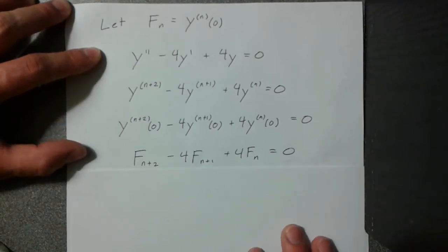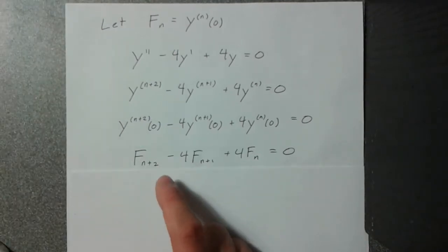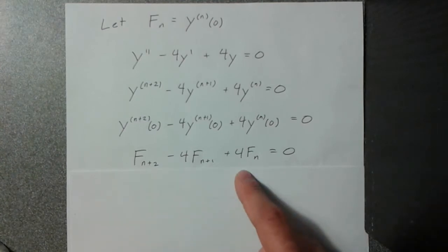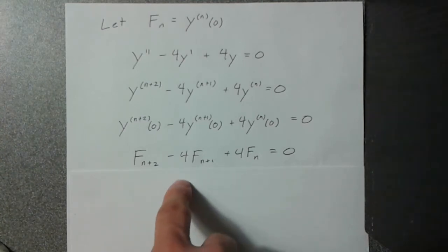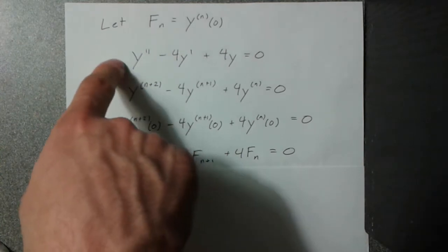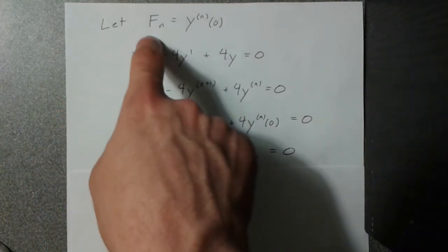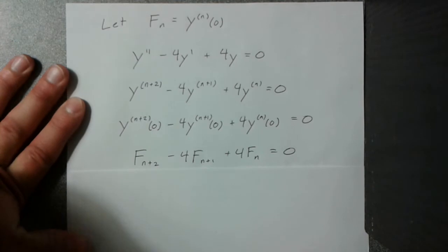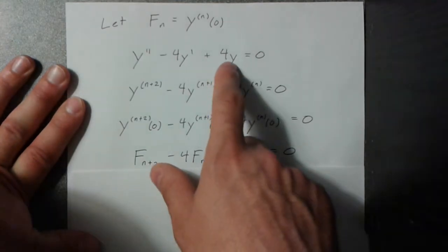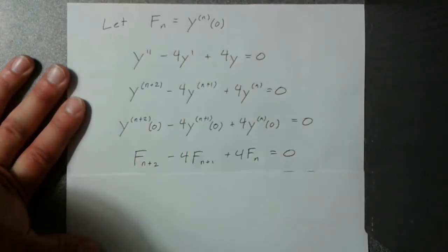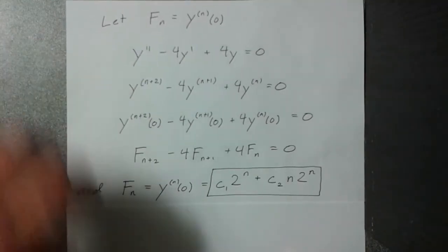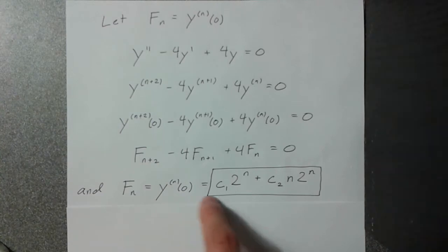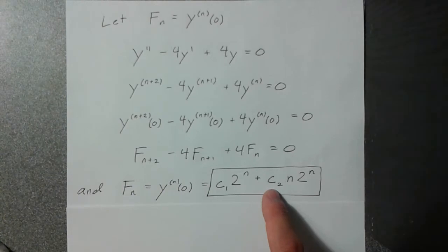And now we can see that this is just the recurrence relation that we're interested in. It follows as a result of having this differential equation and defining it like this. But what also follows as a result is since we know how to solve this differential equation and we found what the nth derivative of y is evaluated at 0, then we get a solution for fn. This is just the nth derivative evaluated at 0, which we determined to be this. I replaced c3 with a c2 just because it was horrible to have c1 and c3. But that's the basic idea.